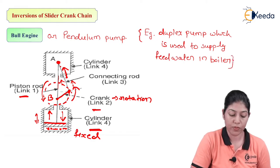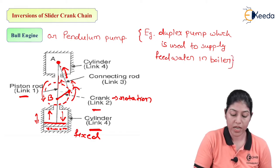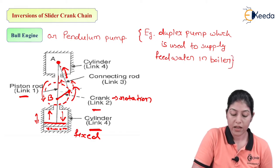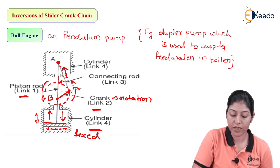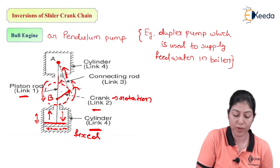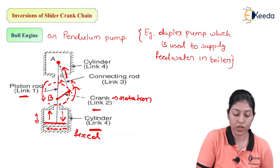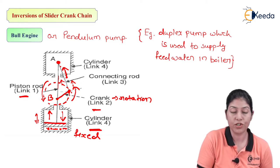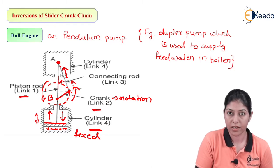An example of this pendulum pump is the duplex pump, which is used in boilers to transfer or supply feed water. The duplex pump is an example of a bull engine, or the first inversion of the slider crank mechanism.